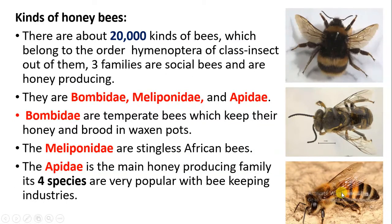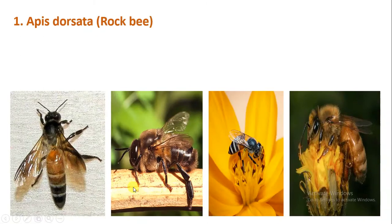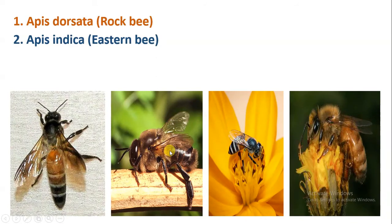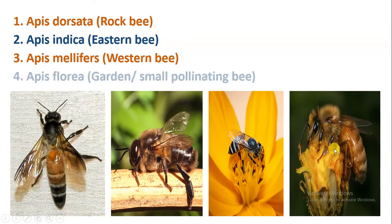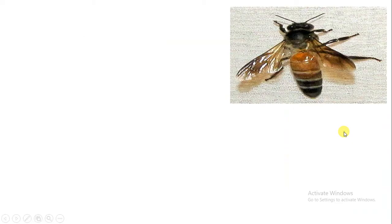Under Apidae, we will study four species which are very popular for producing honey, wax, and many other things — this is the beekeeping industry. The four species belonging to the Apidae family are: Apis dorsata, called the Rock bee; Apis indica, called the Eastern bee; Apis mellifera, called the Western bee; and Apis florea, also called the small pollinating bee or garden bee.